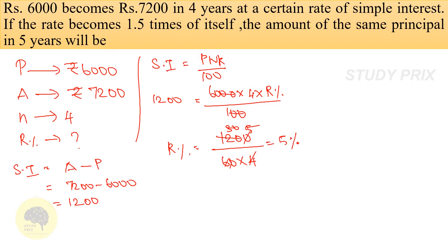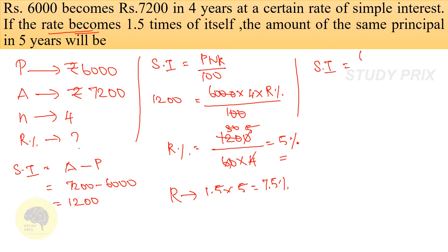The rate of interest in the first case is 5%. The question states that the rate becomes 1.5 times, therefore the new rate = 1.5 × 5 = 7.5%. So 7.5% is the new rate of interest. Now we have to find the simple interest for principal 6000, for 5 years at 7.5%.